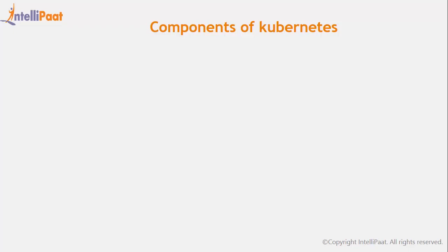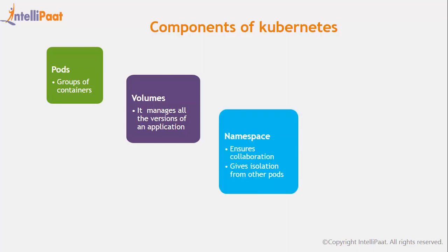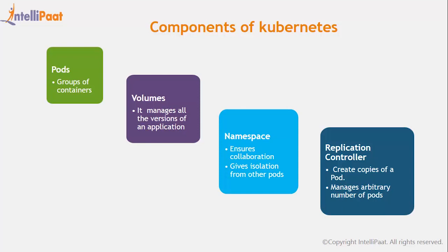There are many components which enable Kubernetes to perform all these tasks. Some of the most important components are: Pods — a collection of containers, usually holding two containers. Volumes — used to keep all the versions of an application or software so as to assist the user to go back to whichever version they need. Namespace — ensures collaboration amongst pods and at the same time gives the required isolation to the pods so that they can work independently. Replication Controller — used to create replicas of the pods and manages an arbitrary number of pods.